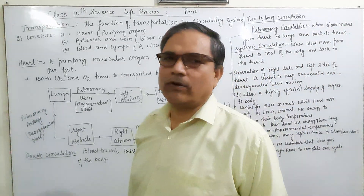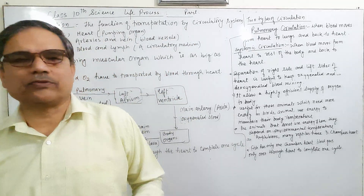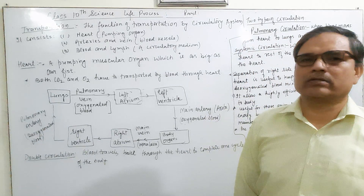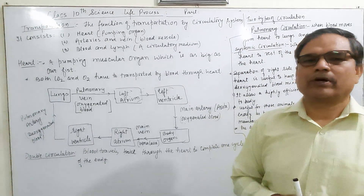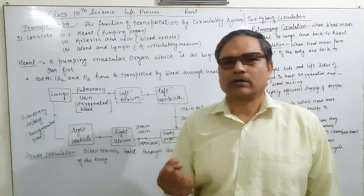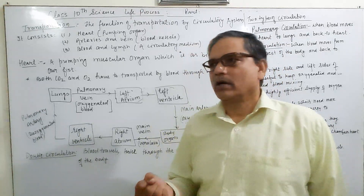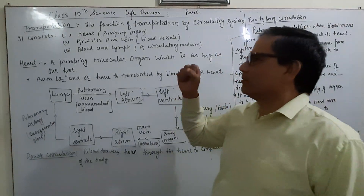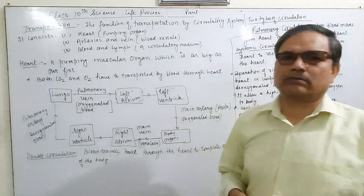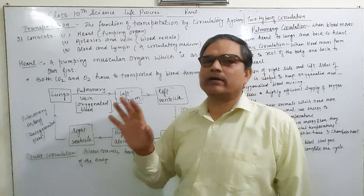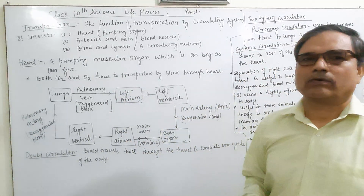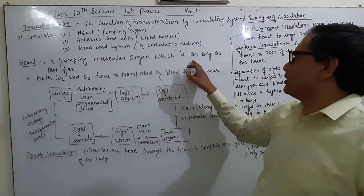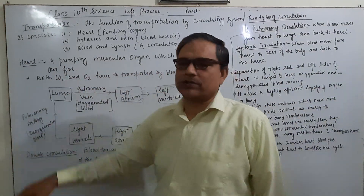The first component we will discuss is the heart. The heart is a pumping organ — it acts as a pump and is as small as our fist. It is a very soft, jelly-like muscular structure which helps to pump the blood at a given pressure.